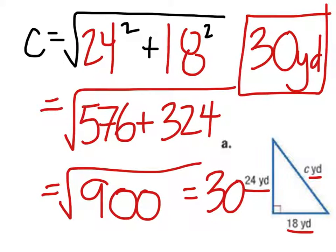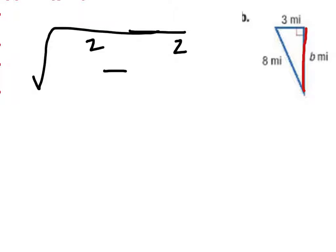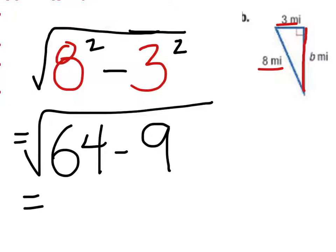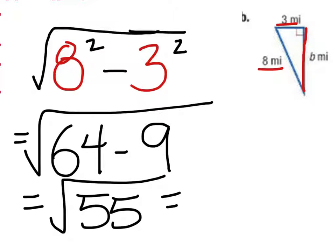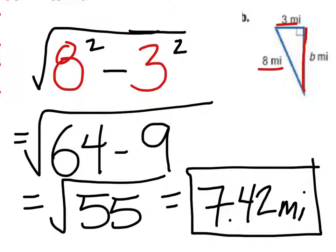For part B, we need to determine: are we finding a leg or the hypotenuse? This side makes up one of the two sides that form the right angle, so we are finding a leg. Since it's a leg, we subtract. We take the square root of 8 squared minus 3 squared: that's the square root of 64 minus 9, which is the square root of 55. That equals approximately 7.42 miles, rounding to the hundredth.